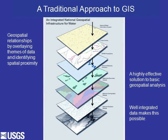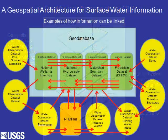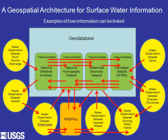Traditionally in a GIS, we overlay information and look at spatial relationships. This doesn't work quite as well in a hydrography system because surface water information is related through the network, not just through space. We need these explicit relationships found in the data model to understand how things relate to each other within the network.